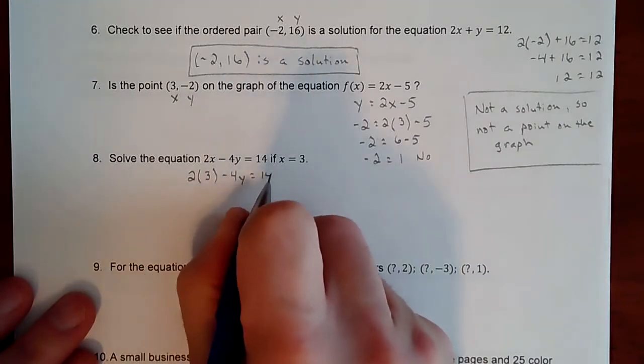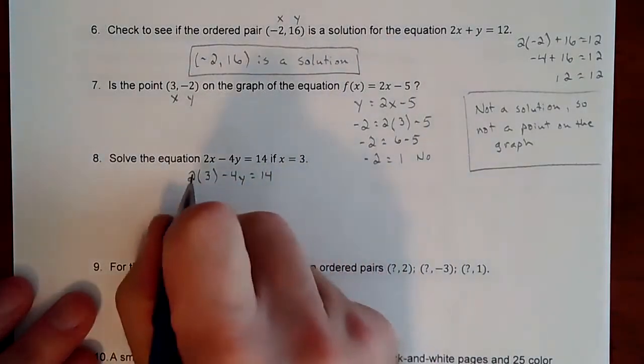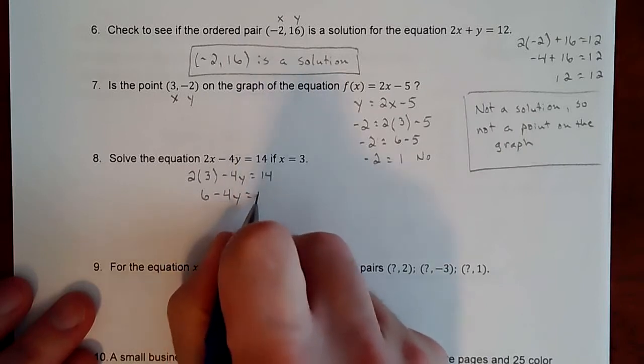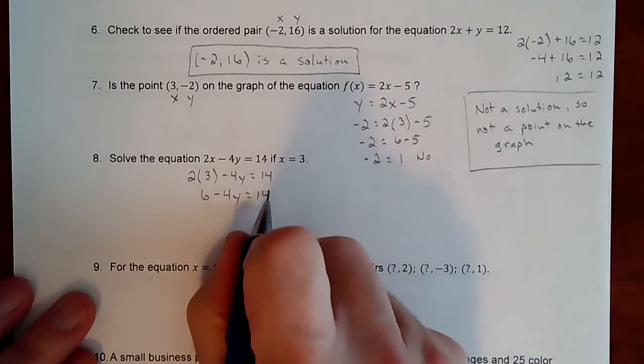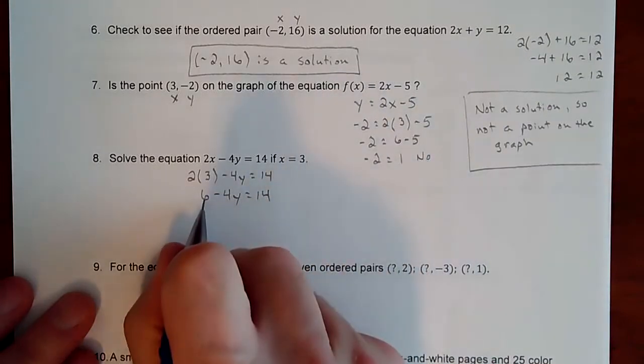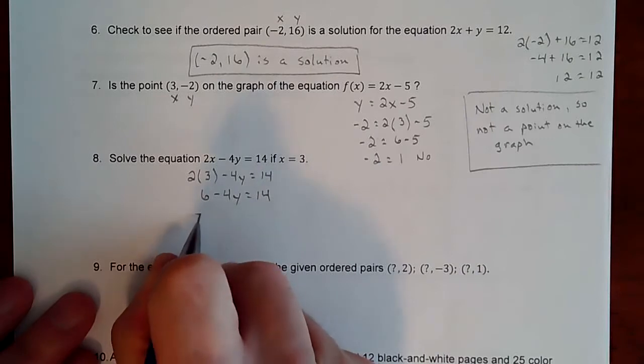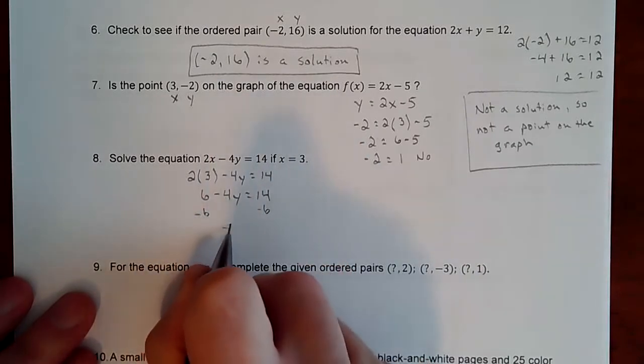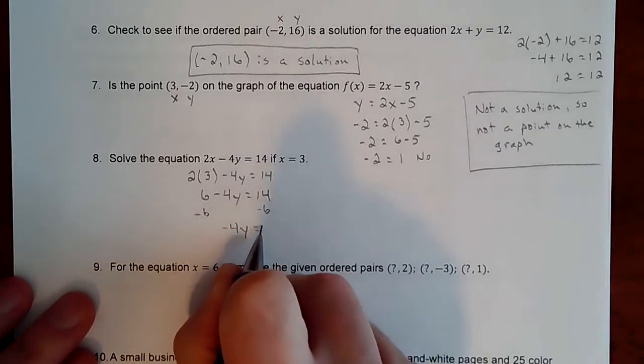All right. So we're trying to make a solution. So if they give us part, we're going to plug it in to find the other part. So that's a 6 minus 4y equals 14. All right. So now I am looking to solve the equation. So I have a 6 that I need to bump over. That's a like term with a 14. So right now it's a positive 6. So I'm going to subtract that over. That would leave me with a negative 4y equals 14 minus 6 is 8.